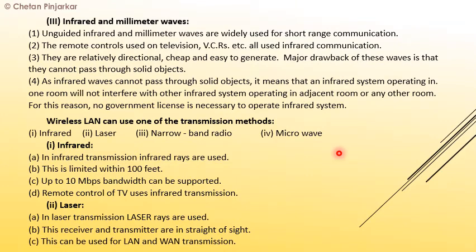Next are infrared and millimeter waves. Unguided infrared and millimeter waves are widely used for short-range communication. If you have a small distance of communication, infrared and millimeter waves are used. Remote controls used on televisions and VCRs all use infrared communication.